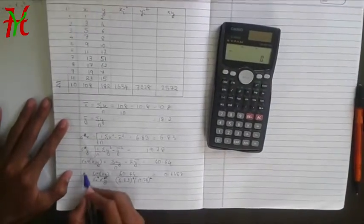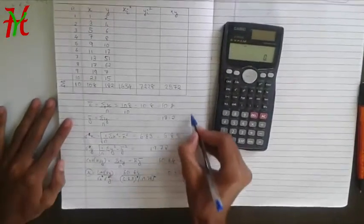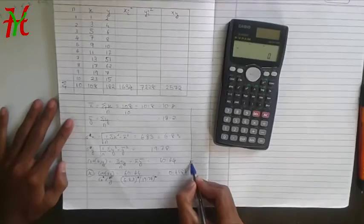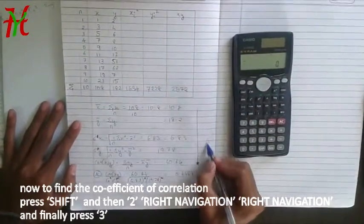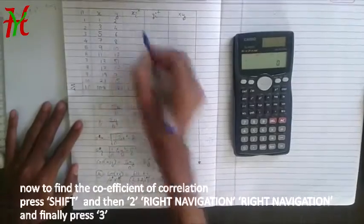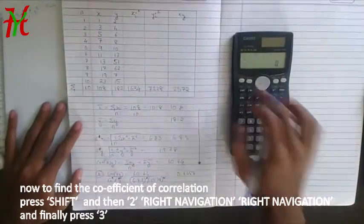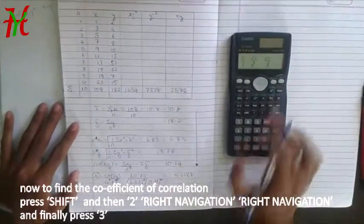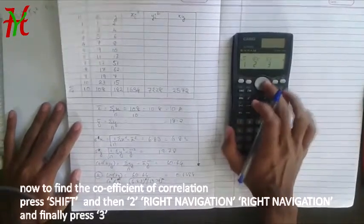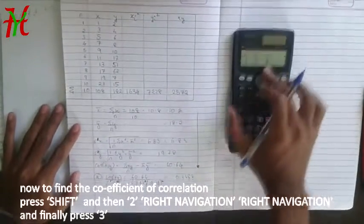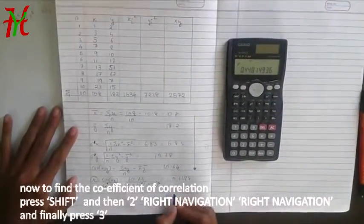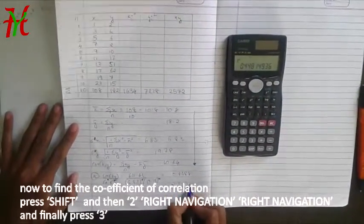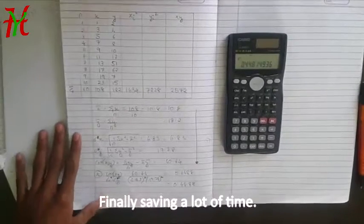Now to calculate just R, we need to do all these steps. Instead, you can do this in just one step by, after feeding these values. That is, just use shift 2, right navigation, right navigation again, and then you can see R, press 3, equals, you get the same value which is 0.4488, thus saving a lot of time.